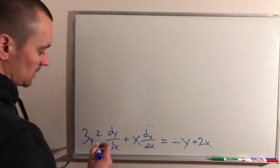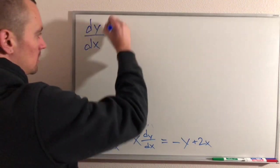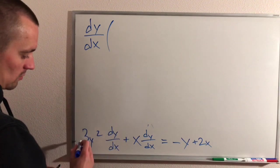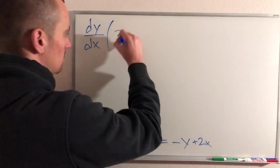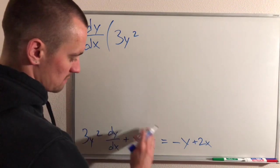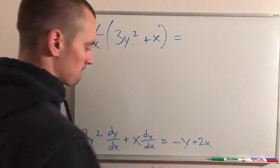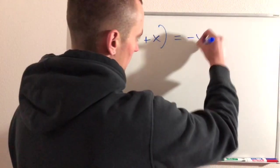So factoring out a dy/dx from the left side of our equation, we'll pull out dy/dx. And that'll get rid of this one, so we'll be left with 3y² here. Pull the dy/dx out of this term, and that'll just leave us with an x. And then over on the right side, we haven't changed anything.